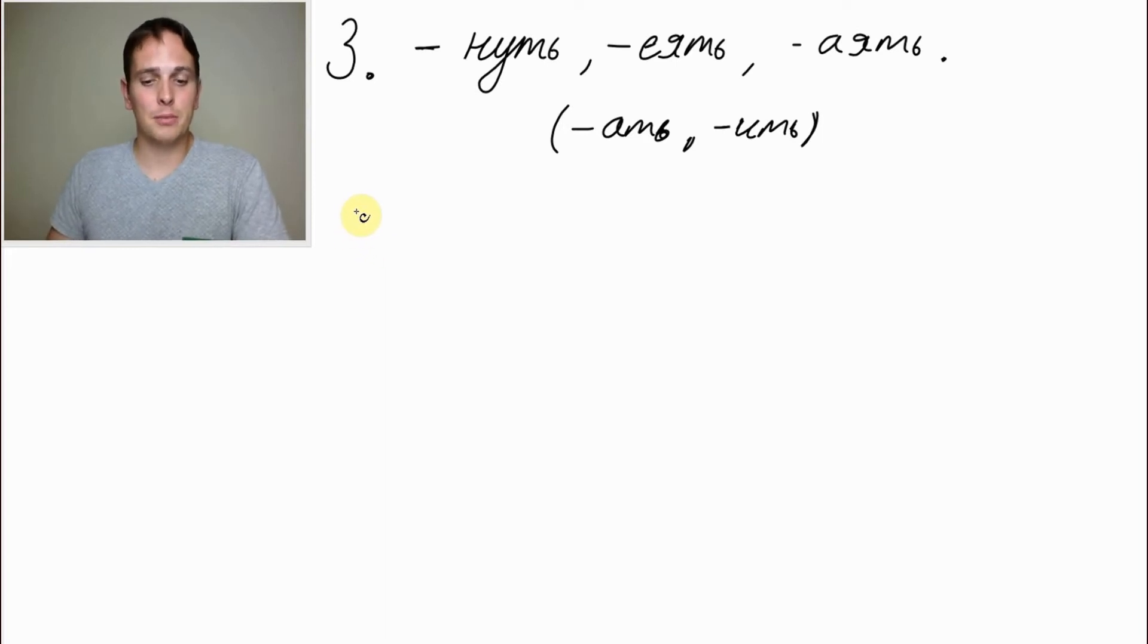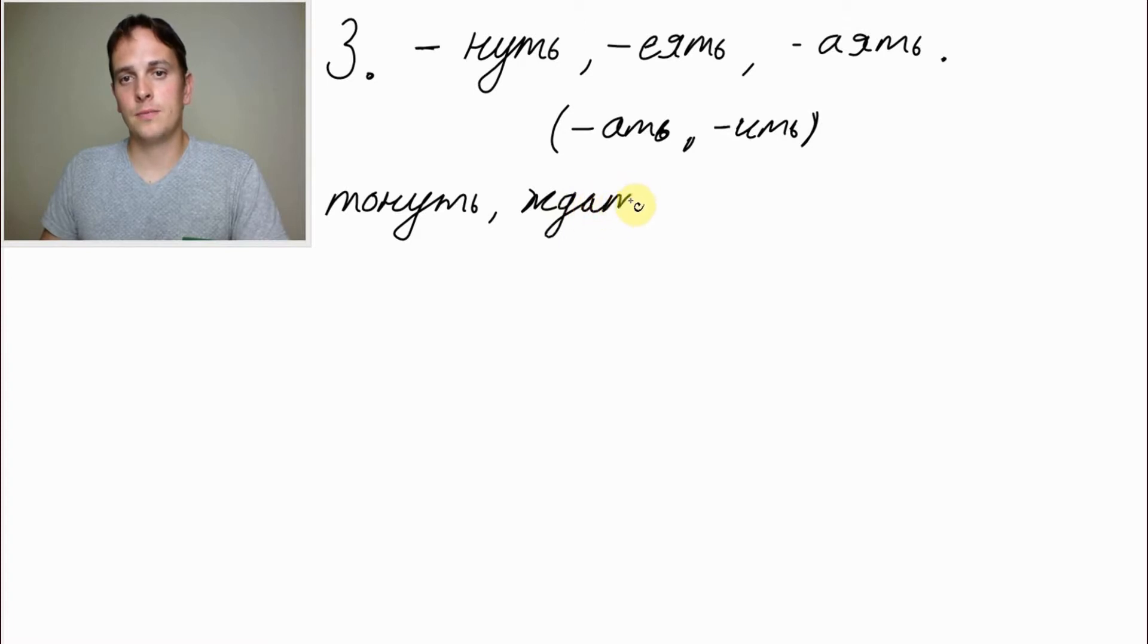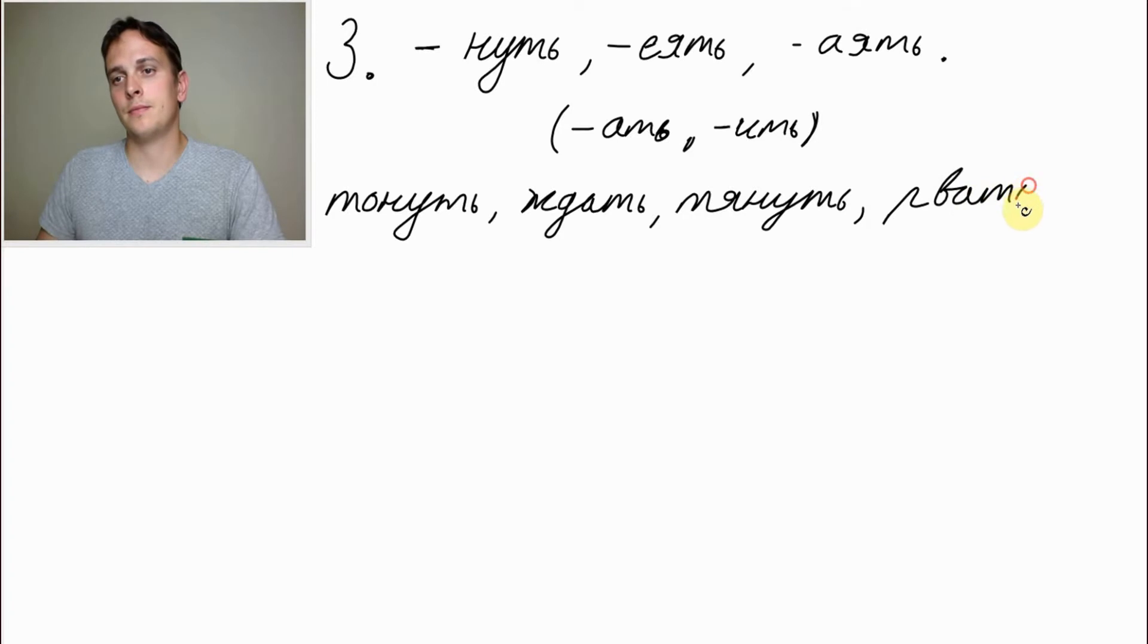Now I choose for you several examples. The first word would be тонуть, тонуть is to go down, to sink. Then ждать, ждать, to wait, to expect. Тянуть, тянуть is to pull or to extend, and рвать is to tear, to tear apart.